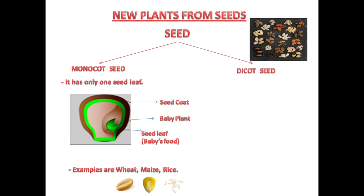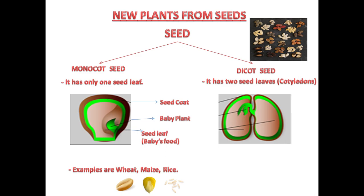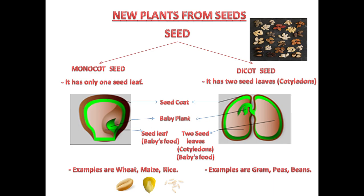The second type of seed is the dicot seed. It has two seed leaves called cotyledons. You can see the parts: the seed coat, the baby plant, and the two seed leaves called cotyledons. The baby plant eats the cotyledons to grow. Examples of plants having dicot seeds are gram, peas, and beans. Please note: after soaking a gram seed in water for a few days, you can observe its parts at home.